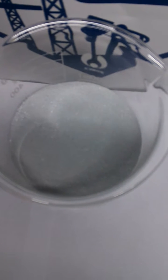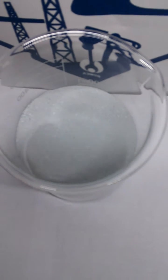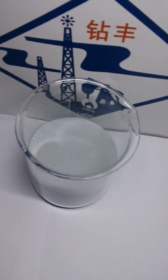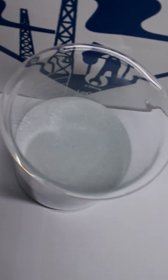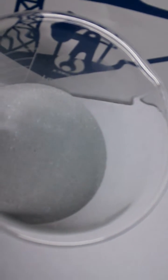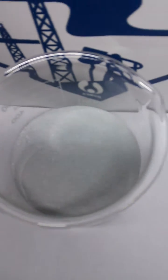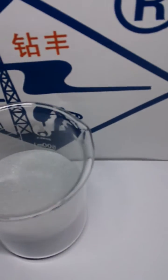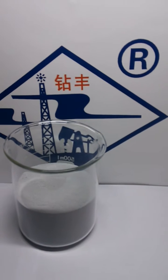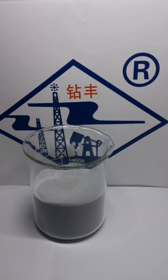It's a kind of cementing additives. The appearance is pale grey powder without poison, and it applies to oil wells whose circulating temperature is between 40 degrees Celsius and 120 degrees Celsius.